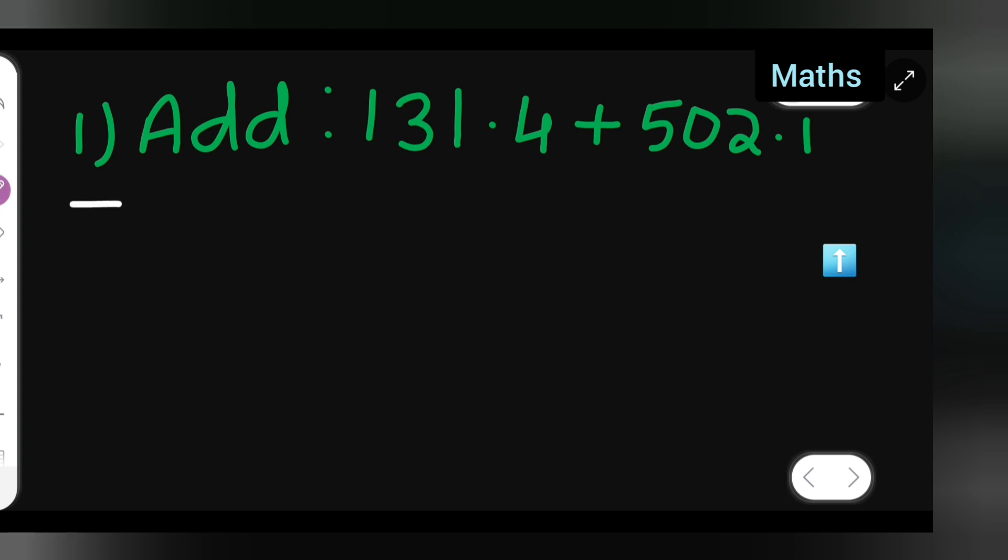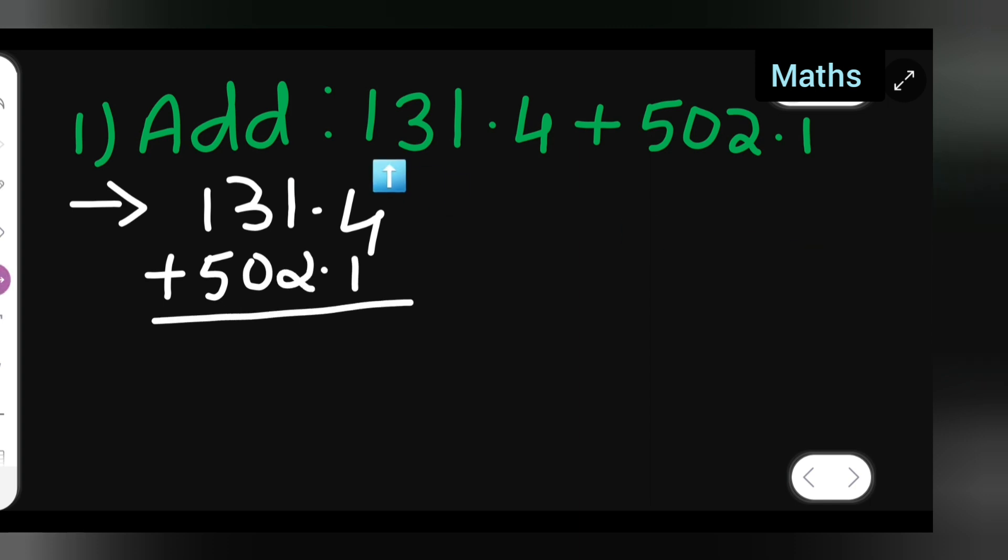Now many of you will find it difficult to add numbers with a decimal point. So here you'll have to write this in order. First, 131.4, plus what I'll have to do is write down 502.1. So first what I have done here is 131.4, I've written it as is, plus 502.1.